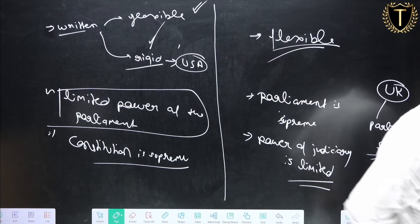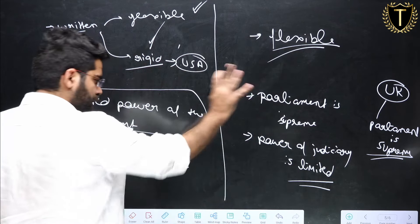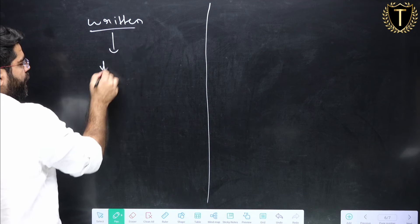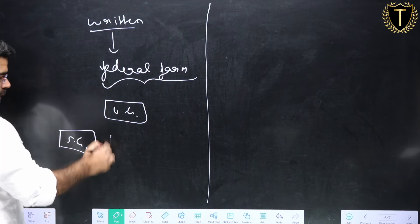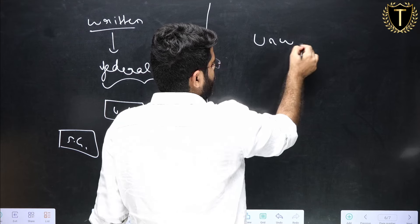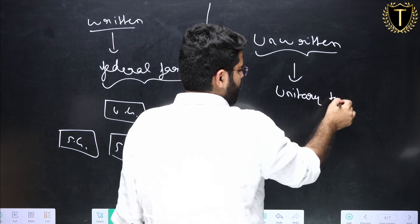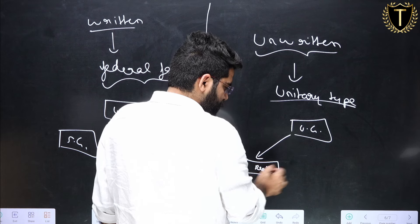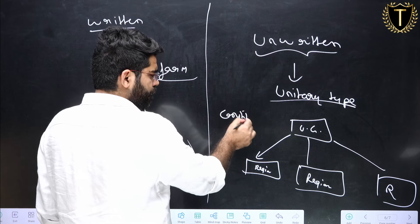Another difference is that a written constitution generally gives rise to a federal form of government — with a union government and multiple state governments. In India we have the union government and up to 28 state governments. But in the case of an unwritten constitution, it generally gives rise to a unitary type of government, where there is a central government and different regions receive powers from the union government.